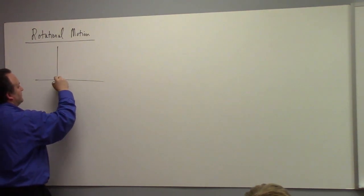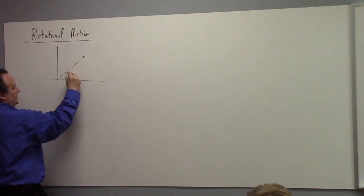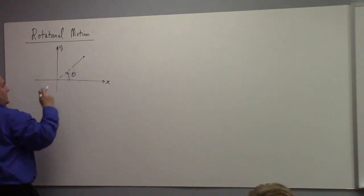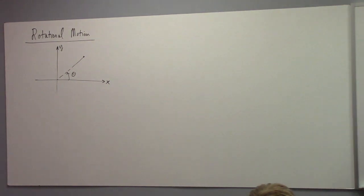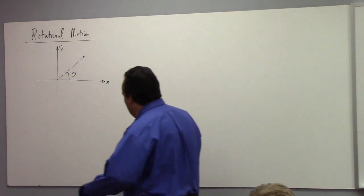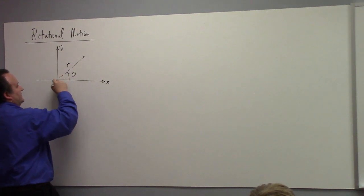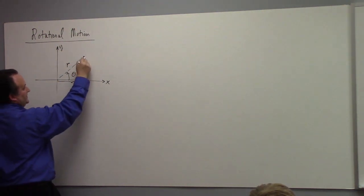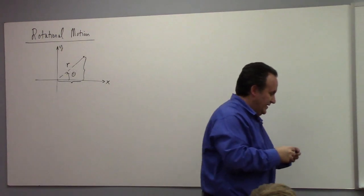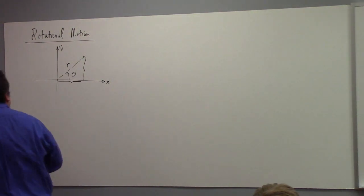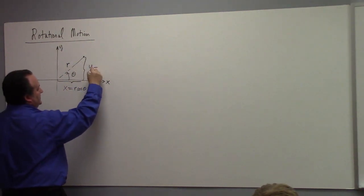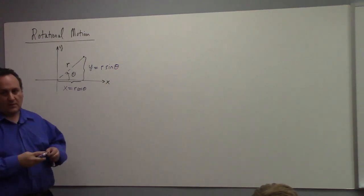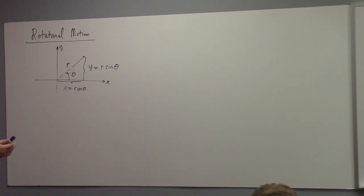Here's a picture. If we talk about this point right here, we can talk about the angle theta swept out from the positive x-axis. Our usual thing — if we want to put coordinates down, we can put the axis of rotation at the origin, and then we can talk about rotational motion with respect to that. The distance from the origin is r. By trigonometry, we have x equals r cosine theta, and y equals r sine theta.